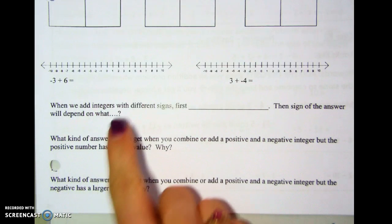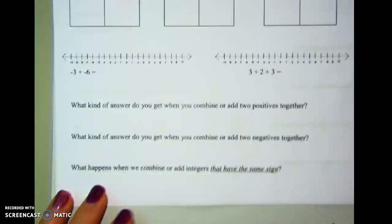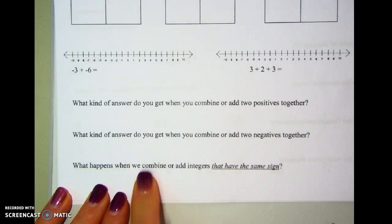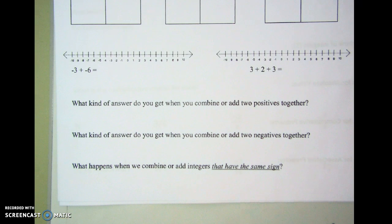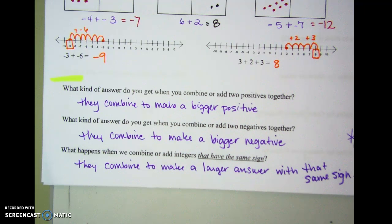Read these three questions at the bottom of the page, put your answers down, and then come back and check. When you combine two positives, they make a bigger positive. When you add two negatives, they combine to make a bigger negative. The general rule is that if you're adding two integers with the same sign, they combine to make a bigger answer with that same sign.